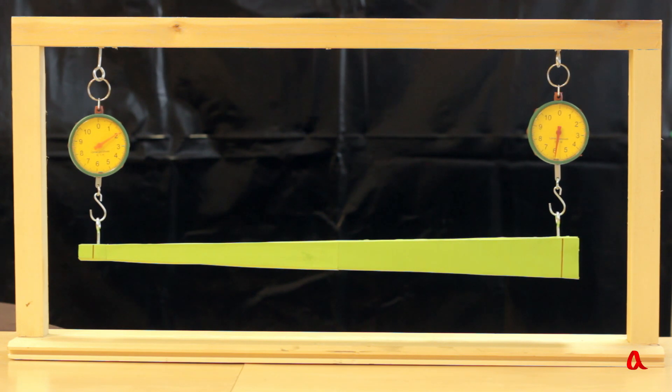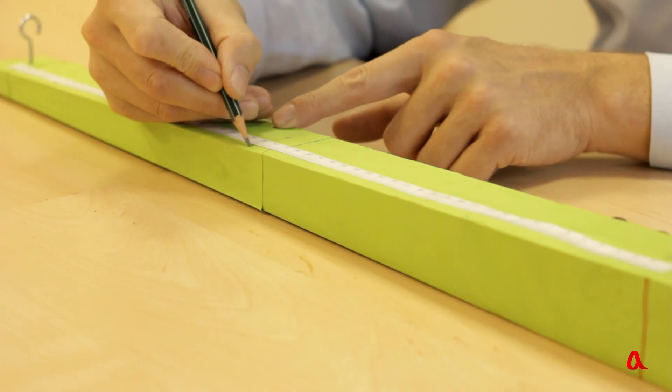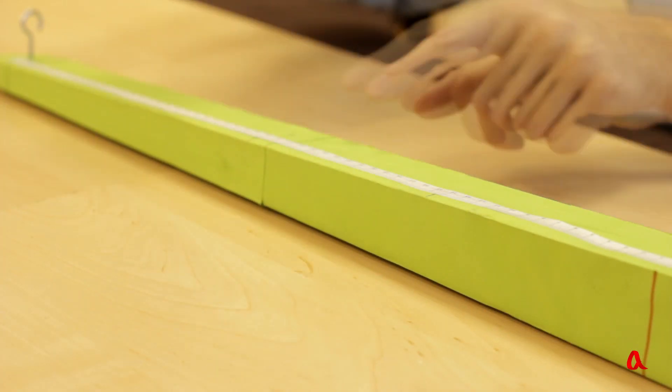To find out where the gravity center is, we have to divide the distance between the suspension points in the 3 to 1 ratio. We divide this distance into four equal parts and mark the gravity center.